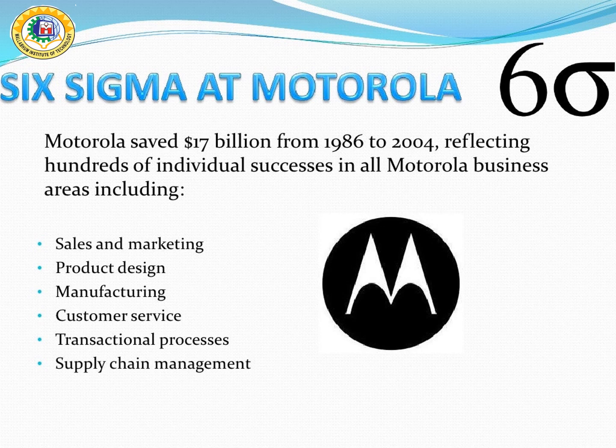Each business and functional leader sponsored the efforts and provided the ongoing governance needed to remove barriers and achieve results. The program further evolved in 2005, when Motorola added lean concepts to the traditional Six Sigma framework to identify redundancies and reduce costs and cycle time. Their emphasis on reducing waste and non-value-added activities was critical in addressing the continuing competitive pressures and increasing productivity.